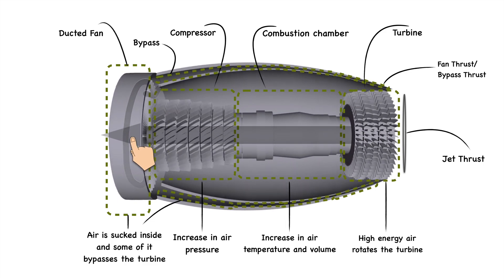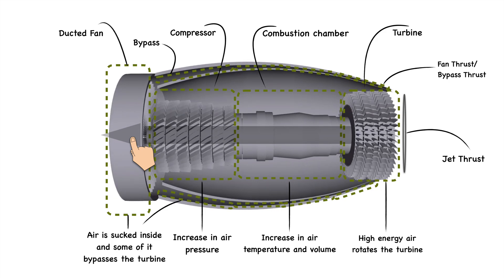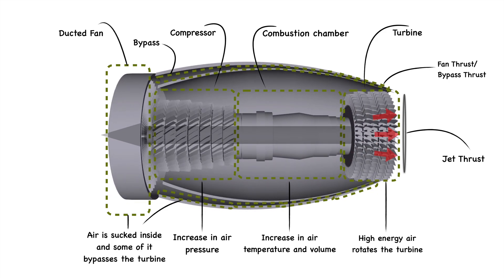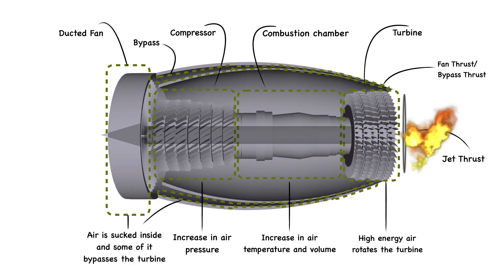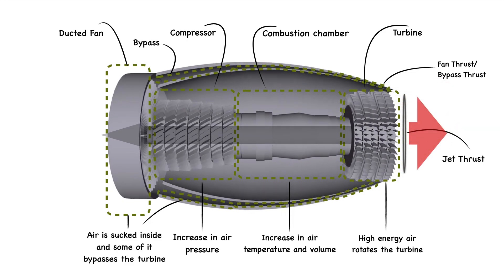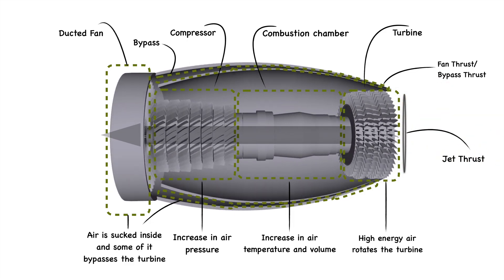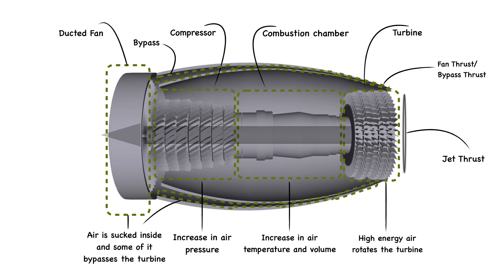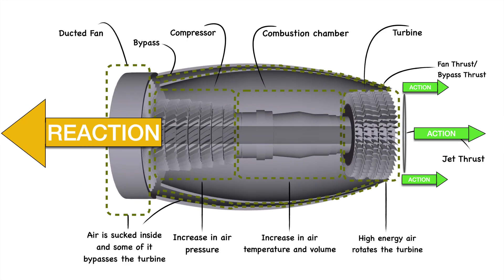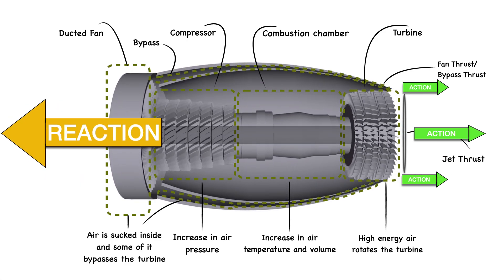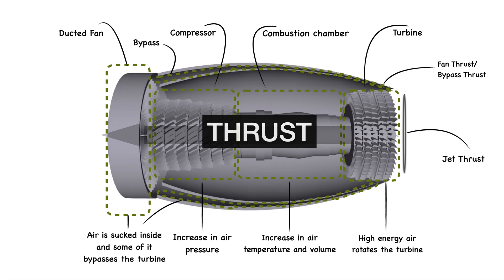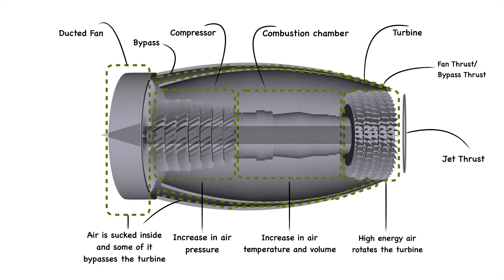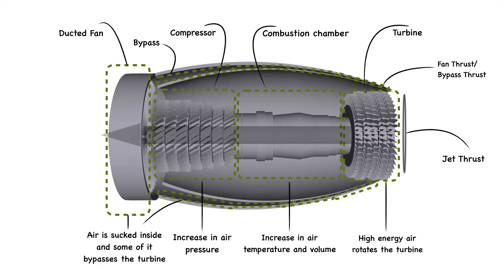This way all the components keep rotating and working. At the end, the rest of the gases in the turbine leave the nozzle producing a jet. This jet combined with the bypass jet, acting as action forces, produce powerful thrust as a reaction force and the aircraft moves forward.